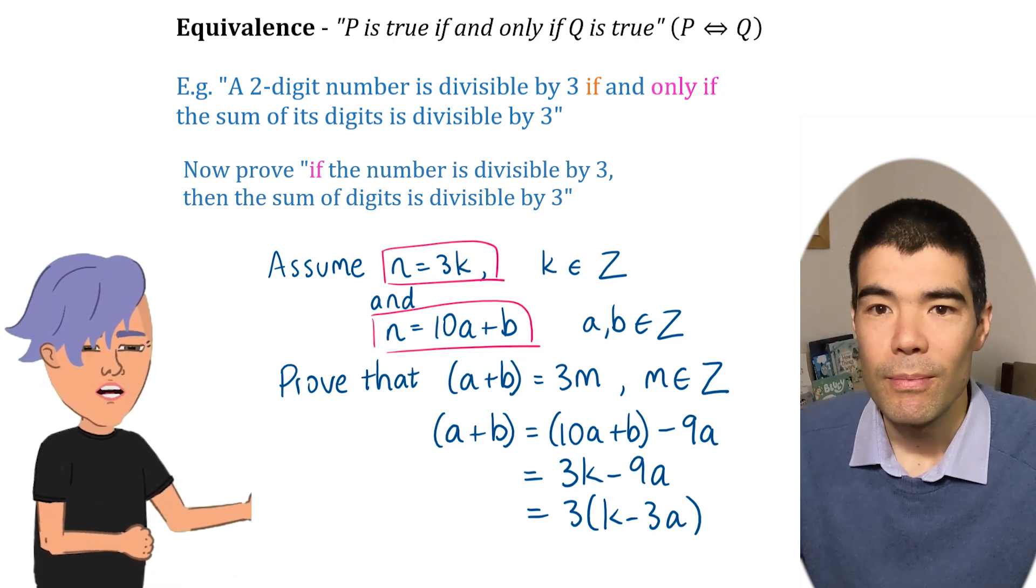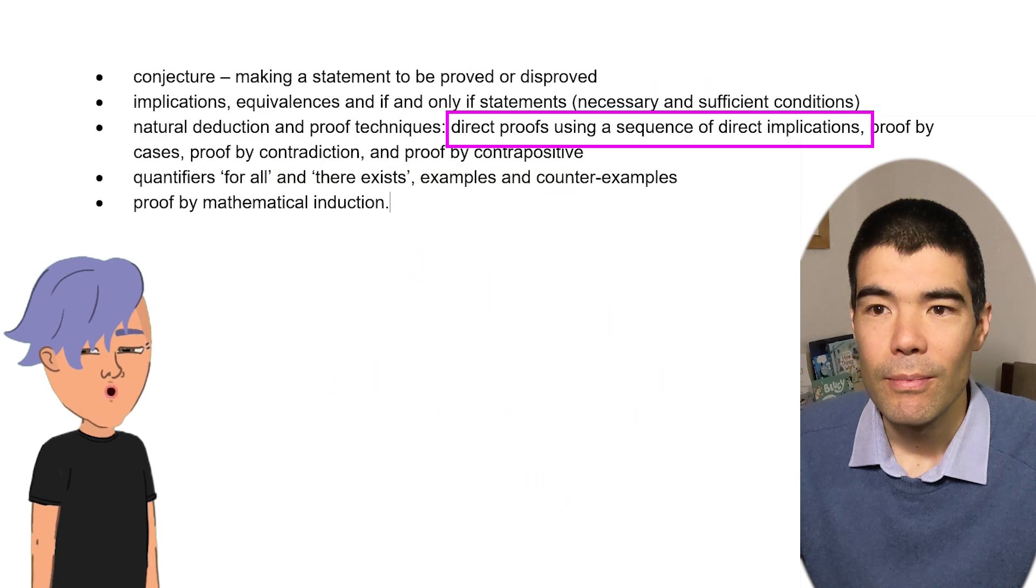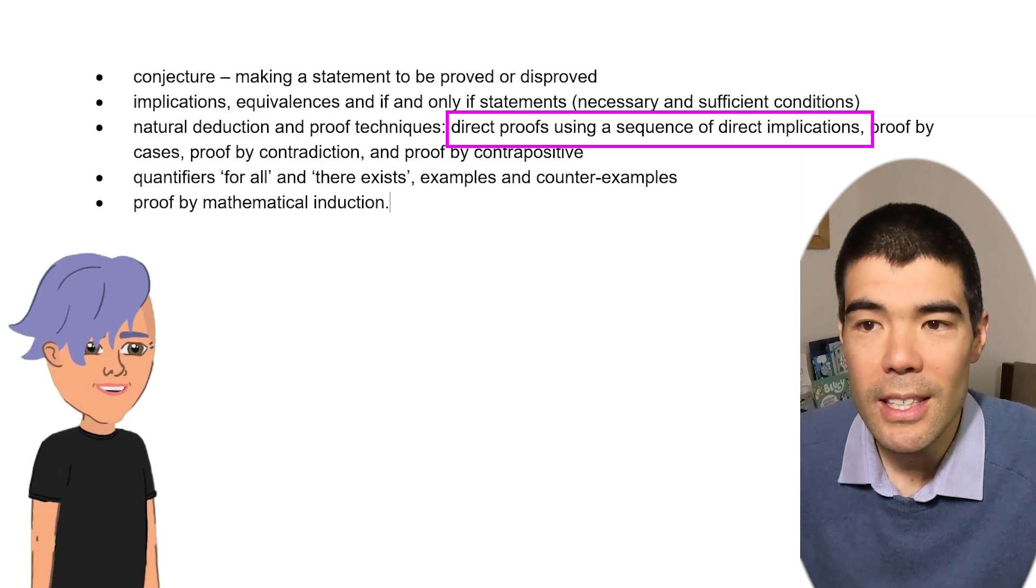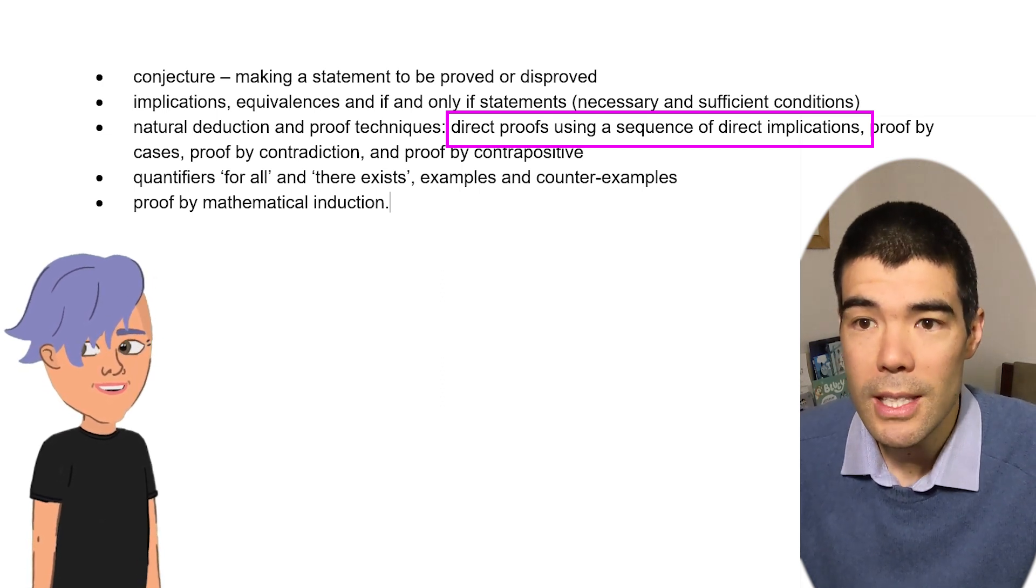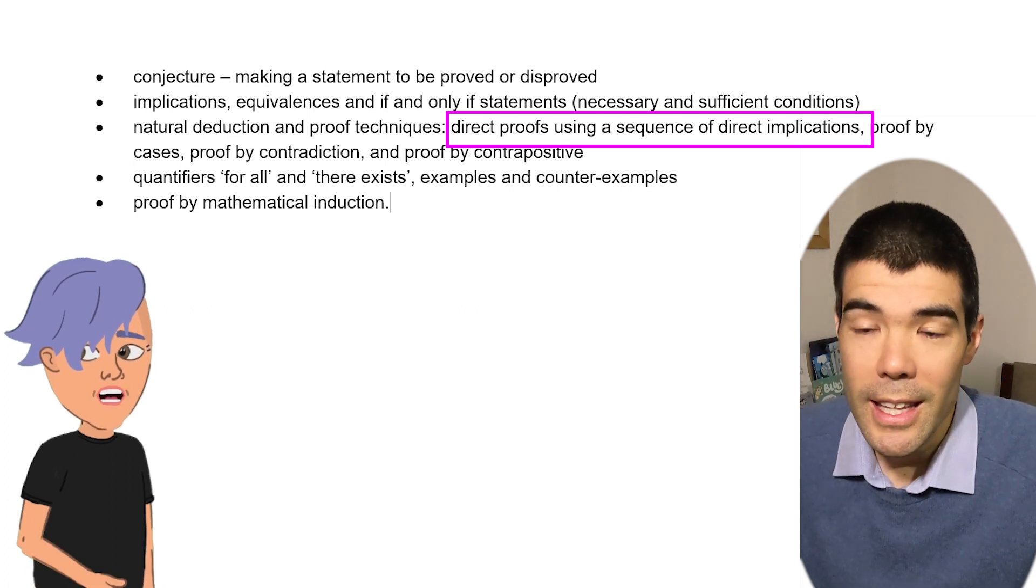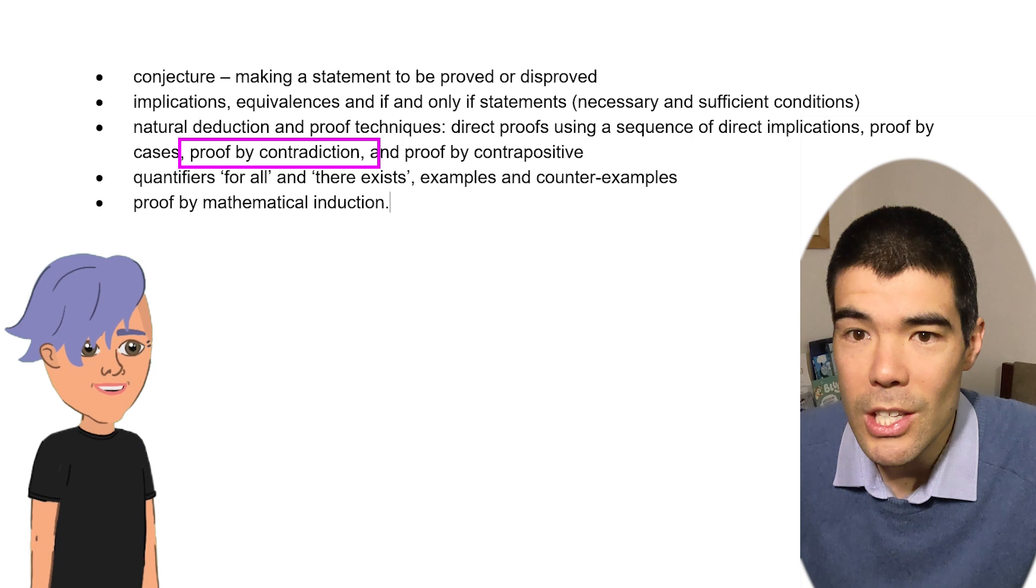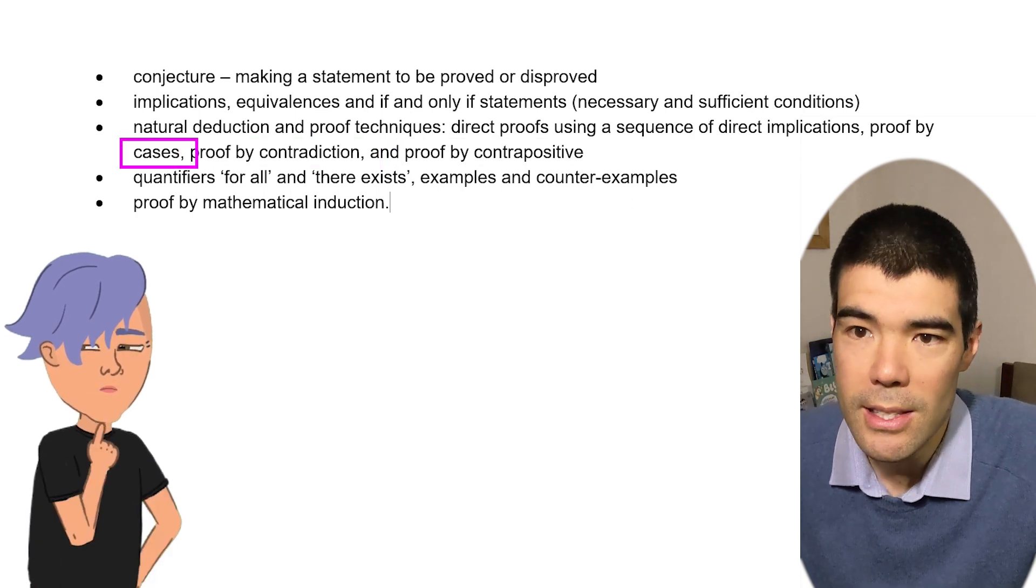Okay, I feel like I'm getting somewhere. What's next? Direct proofs using a sequence of direct implications. That's what we just did. Proving p implies q by assuming that p is true and working step by step until we prove that q is true. What else could you do? It's logic, right? There's other ways. Proof by contradiction, proof by contrapositive. But let's start with proof by cases.